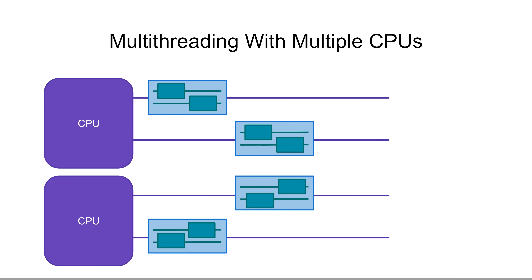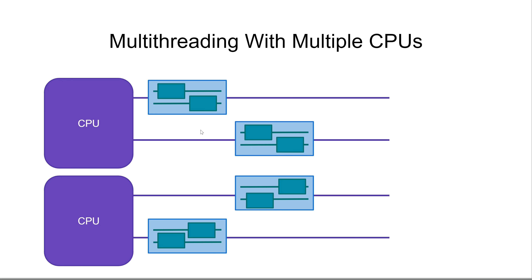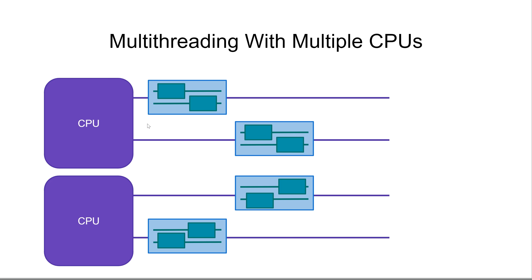Modern computers typically come with multiple CPUs, or CPUs with multiple cores, which in practice is the same thing. On a modern computer, you might actually have multiple CPUs executing applications simultaneously. That means some applications might actually be running at the exact same time because they are being executed by different CPUs. Each CPU may still context-switch between applications and internally between threads, so some threads are not exactly simultaneous, but some will be because of the multiple CPUs.